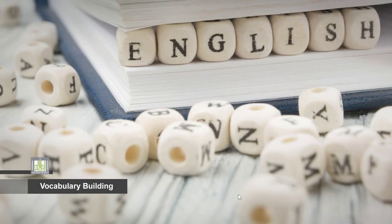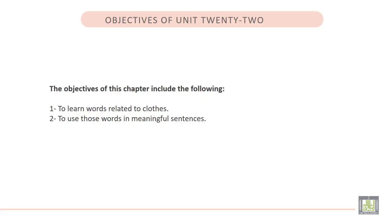Vocabulary Building 1, Unit 22: Clothes. The objectives of this chapter include the following: 1. To learn words related to clothes. 2. To use those words in meaningful sentences. Now, listen to the video of this unit.